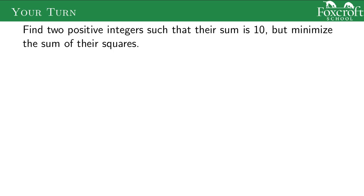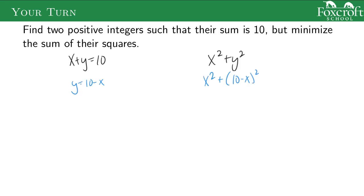Here's one for you to try on your own. Find two positive integers such that their sum is 10 and you minimize the sum of their squares. So we want x plus y equals 10 — those are two different numbers. The thing we want to minimize is x squared plus y squared — let's call it capital S for sum. But right now there's an x and a y, so we need to relate these two together.